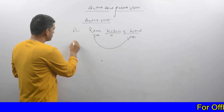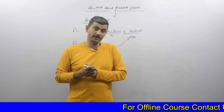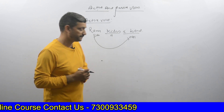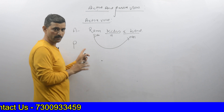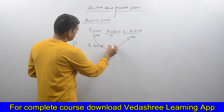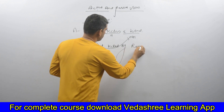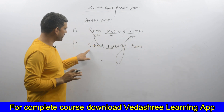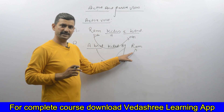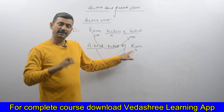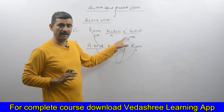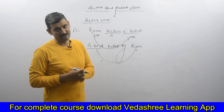Now, what is passive? In passive voice, our subject appears to be receiving an action. So the subject here becomes 'a bird.' You will see that it is 'a bird killed by Ram.' This is the main difference — in active voice the subject appears to be doing an action, and in passive voice the subject appears to be receiving the action.